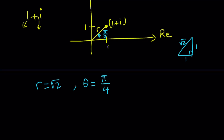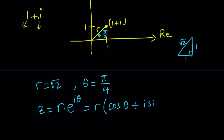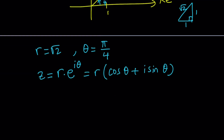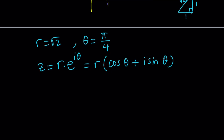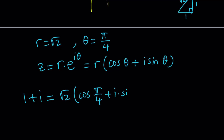With those two pieces of information, any complex number z can be written as r times e to the power i times theta. This is also equivalent to r times cosine theta plus i sine theta — if you look at the expansions of those functions, you see that beautiful identity. So we can write 1 plus i as square root of 2 times cosine(π/4) plus i times sine(π/4), and plugging in √2/2 for both and simplifying gives us 1 plus i exactly.